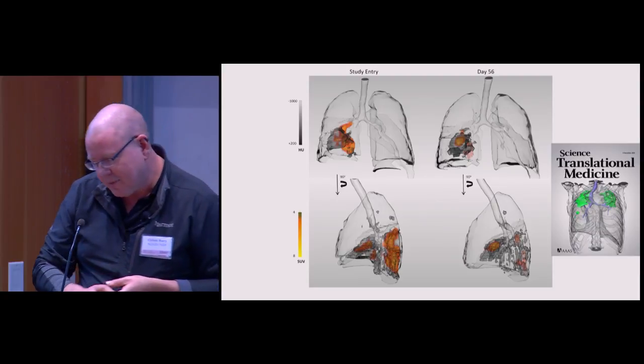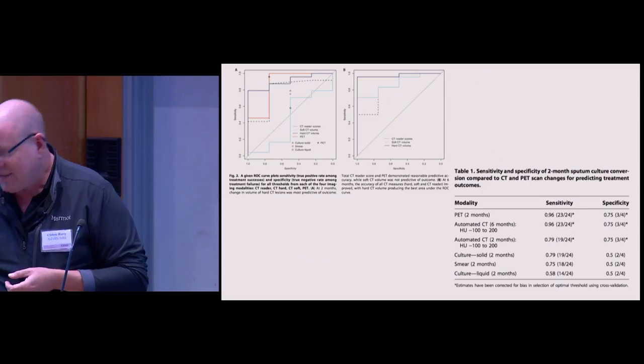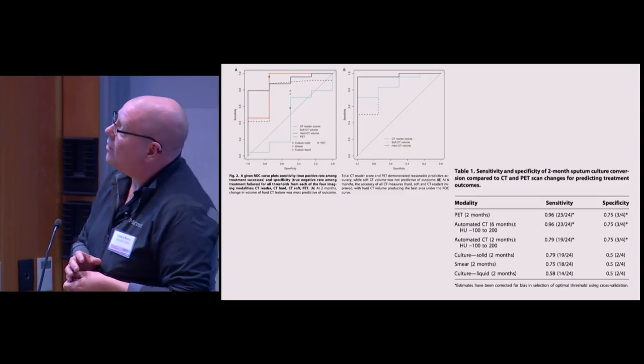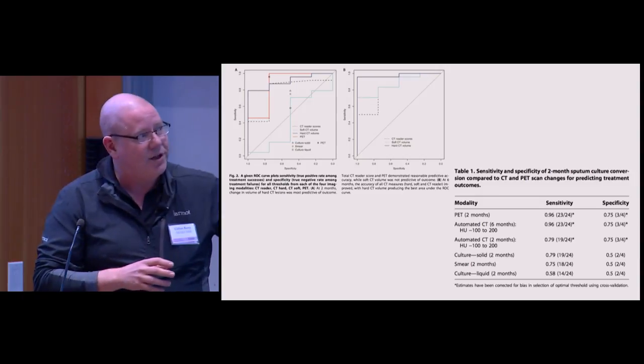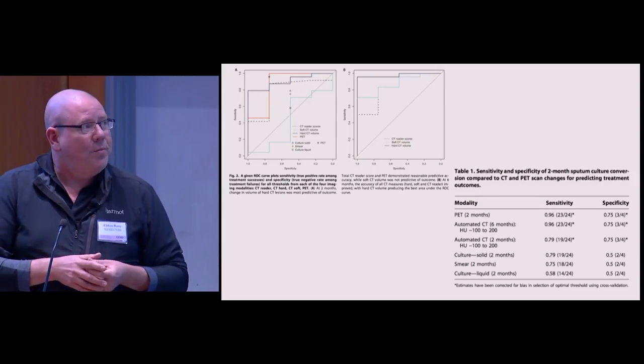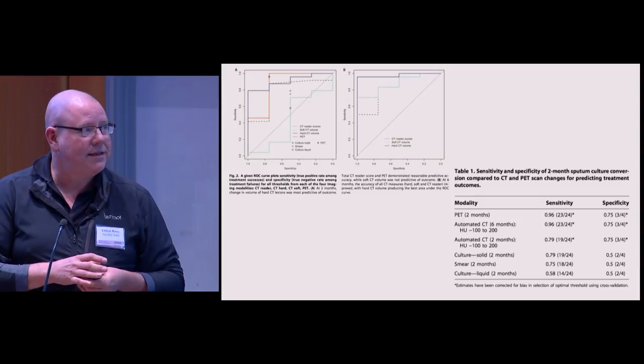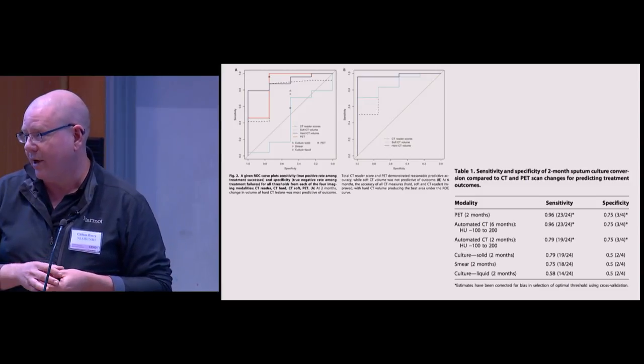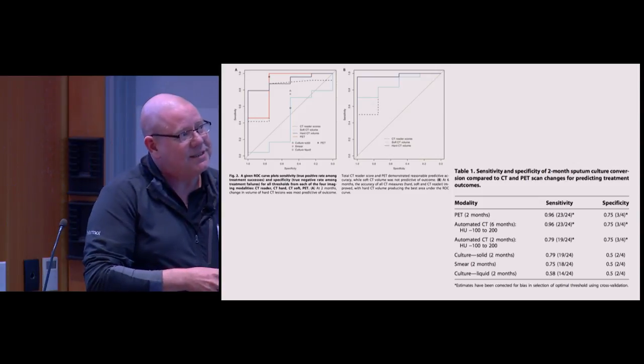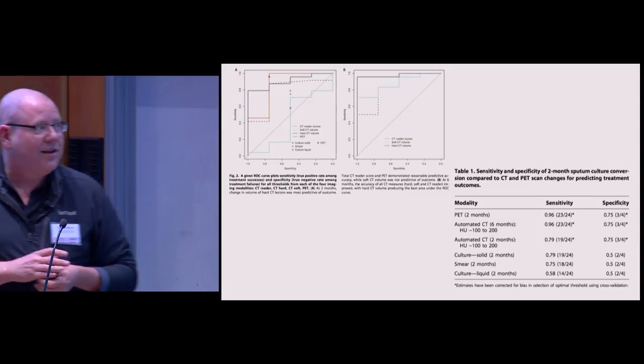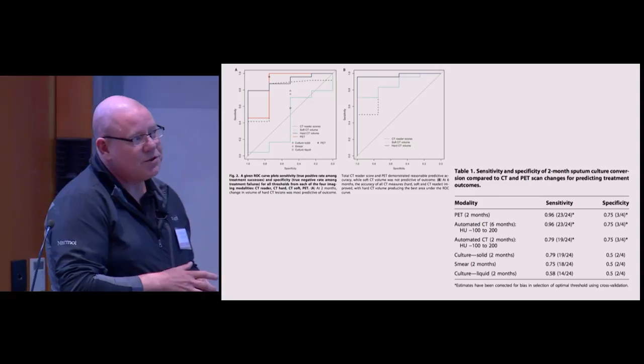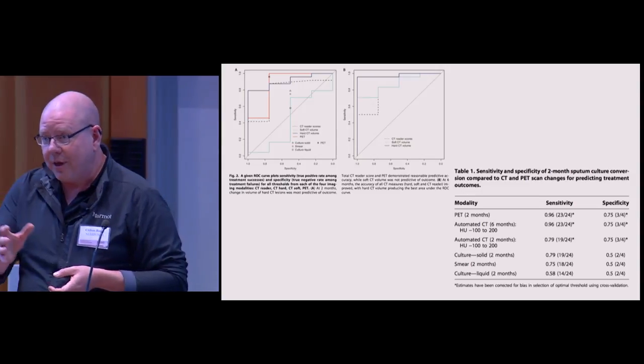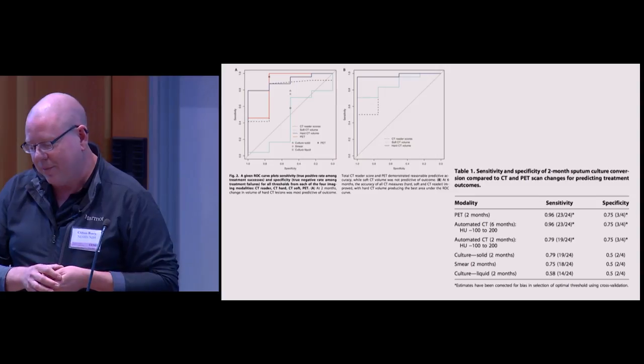PET-CT and looking functionally at what's happening in the lungs is a pretty good indicator of how patients are going to do on chemotherapy. PET at two months is 96% sensitive and 75% specific for predicting the outcome of that patient two and a half years later—did they cure their MDR disease? Culture is only about 79% sensitive and 50% specific in determining that same outcome. We were clearly doing much better than just at a bulk level.